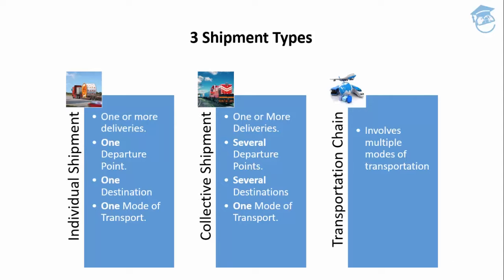There are three shipment types in our standard system. The first is an individual shipment. As the name suggests, an individual shipment typically has one or more deliveries within it, a single point of departure, one destination, and uses a single mode of transport to fulfill the entire delivery from start to end.